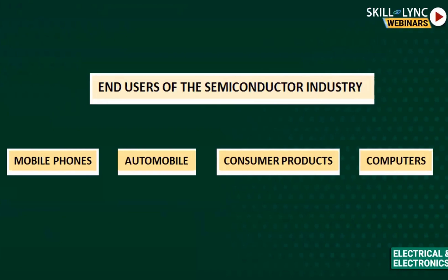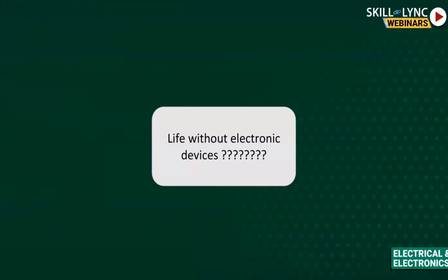Consumer products — almost all home appliances these days are automated. And computers, including personal computers, laptops, and tablets, are the major end users of this semiconductor industry. As we have seen some highlights about the semiconductor industry, we cannot imagine life without electronic devices. Even during the COVID-19 period, these electronic devices helped us enormously, and technology has improved a lot in the past six to seven months. Life cannot exist without electronic devices.